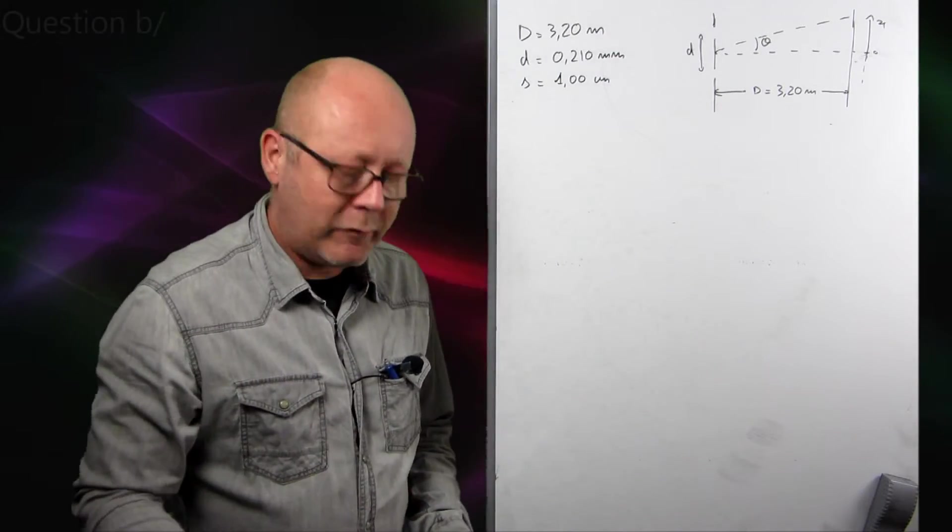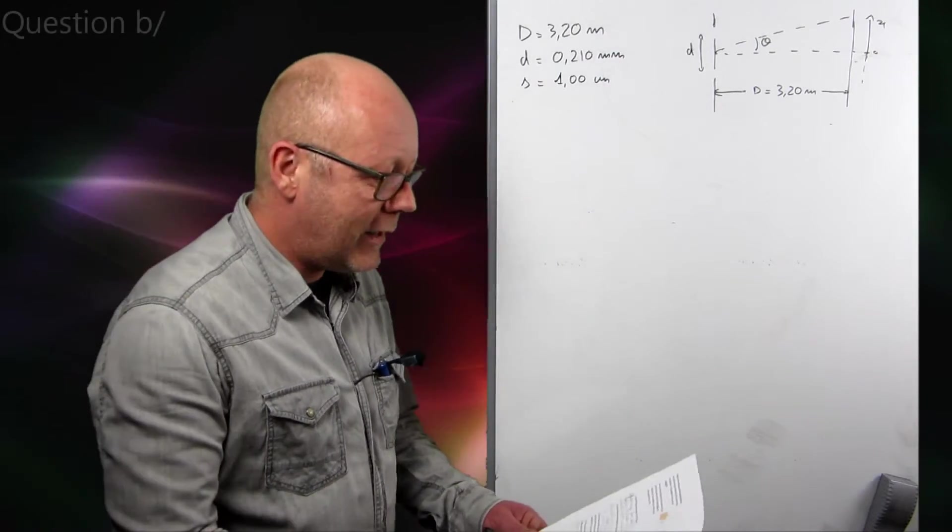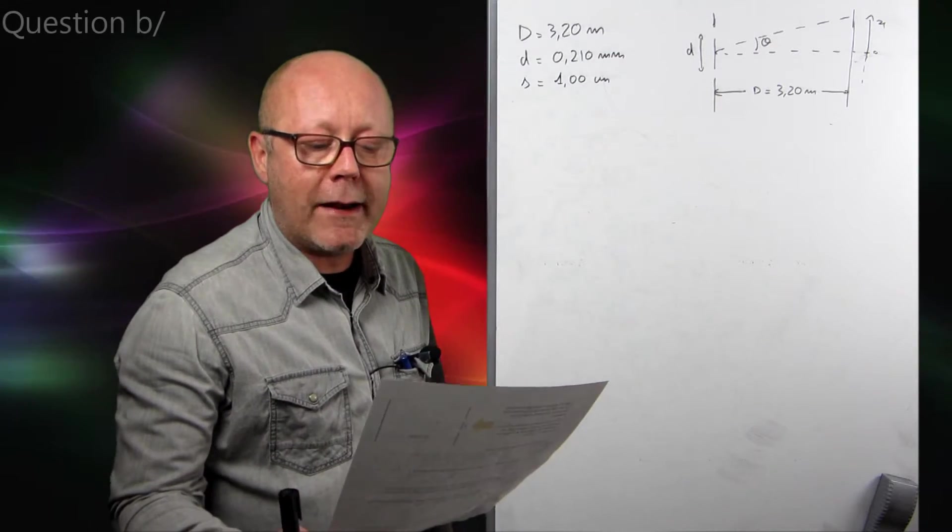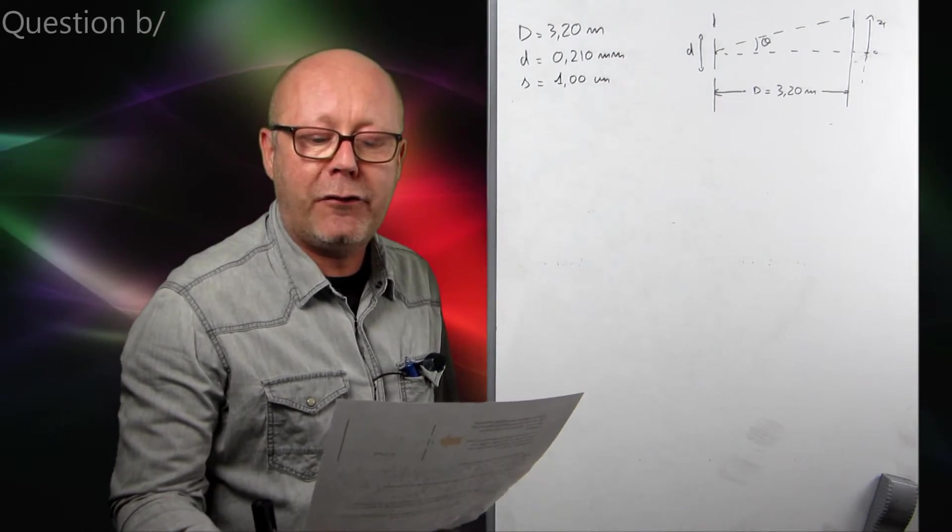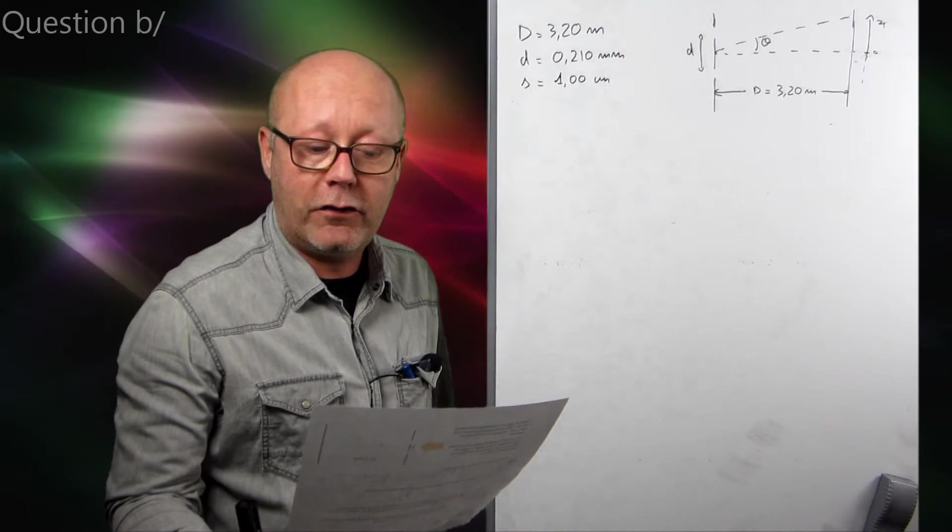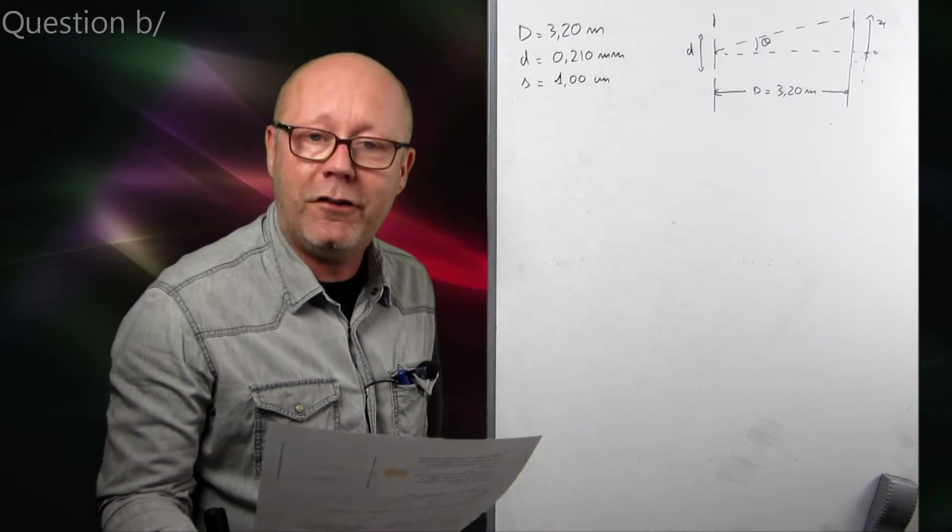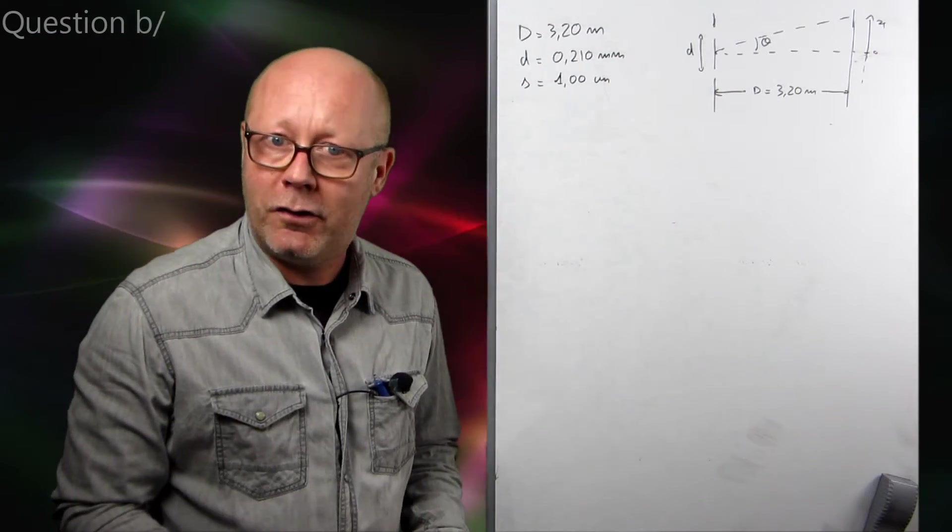Now, that's little a. So, we've got two marks in the pocket. Little b. Determine the wavelength of the light that passes through the slits. Three marks. So, it's an easy question. No question, we mustn't miss it.